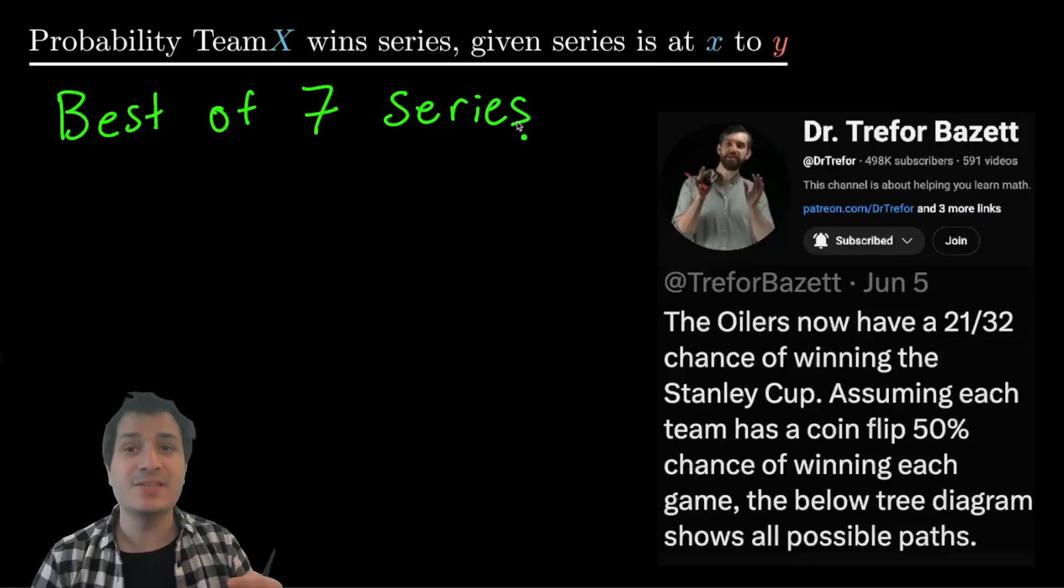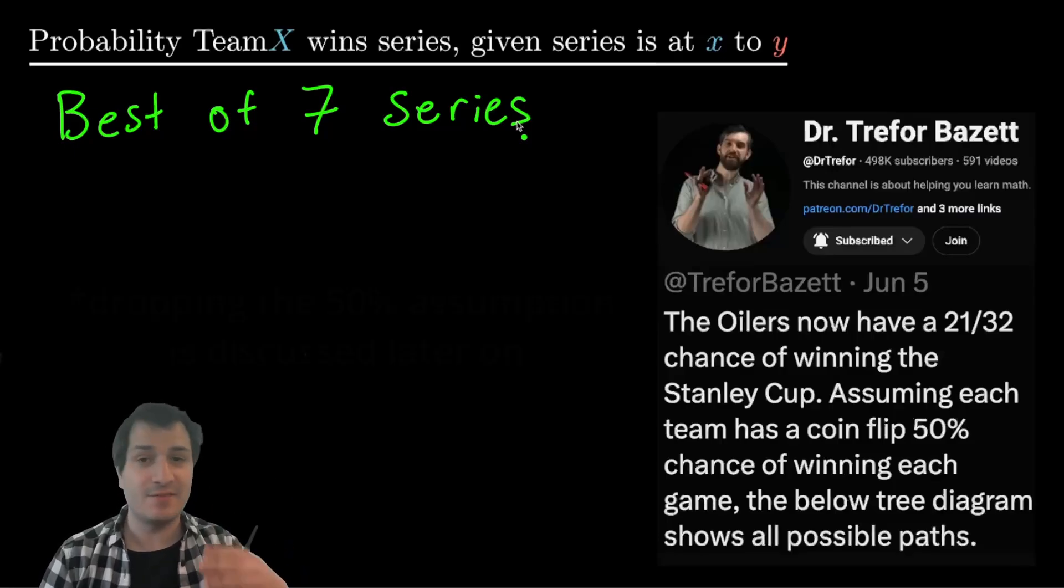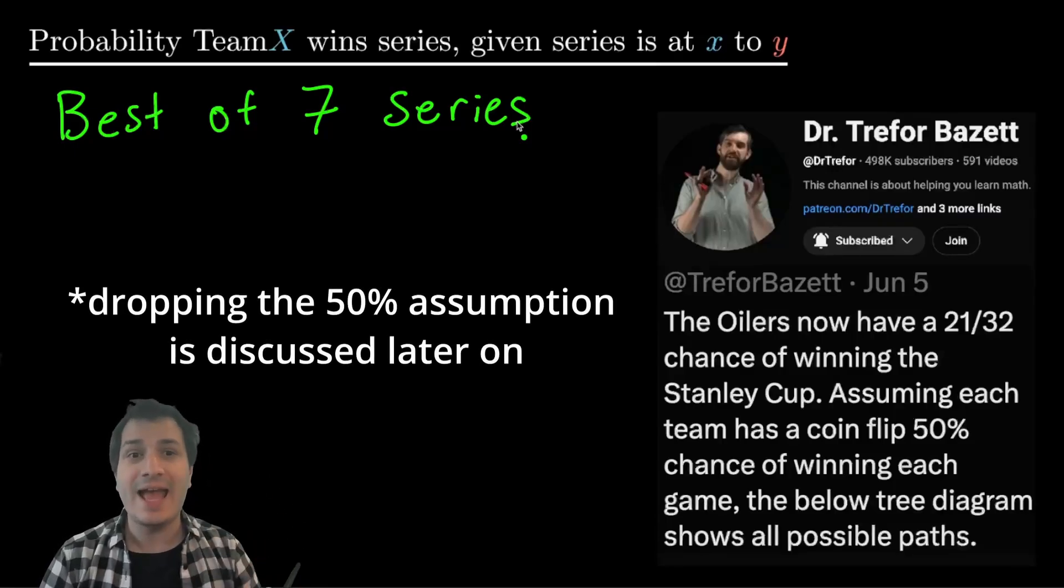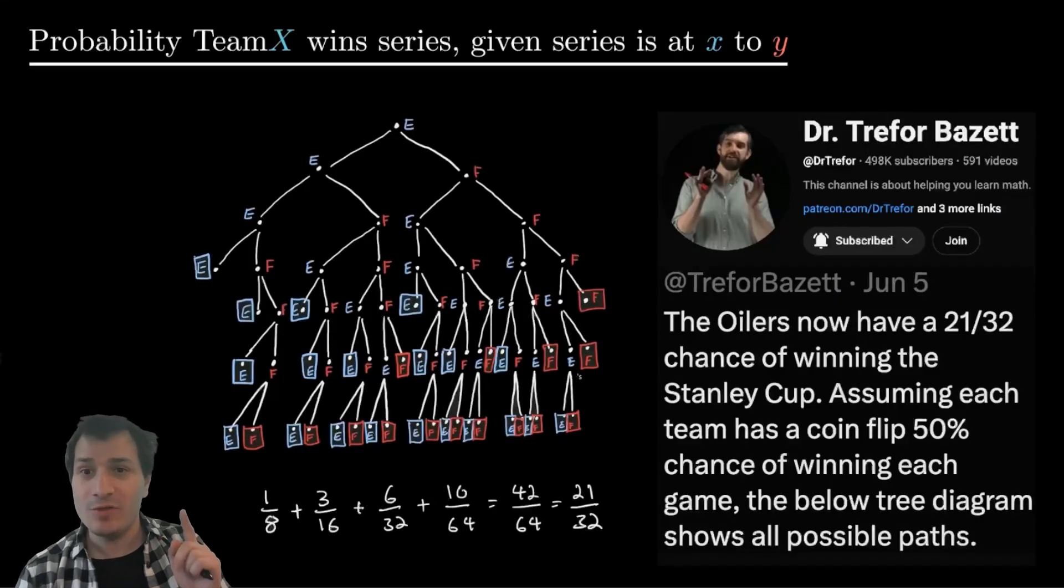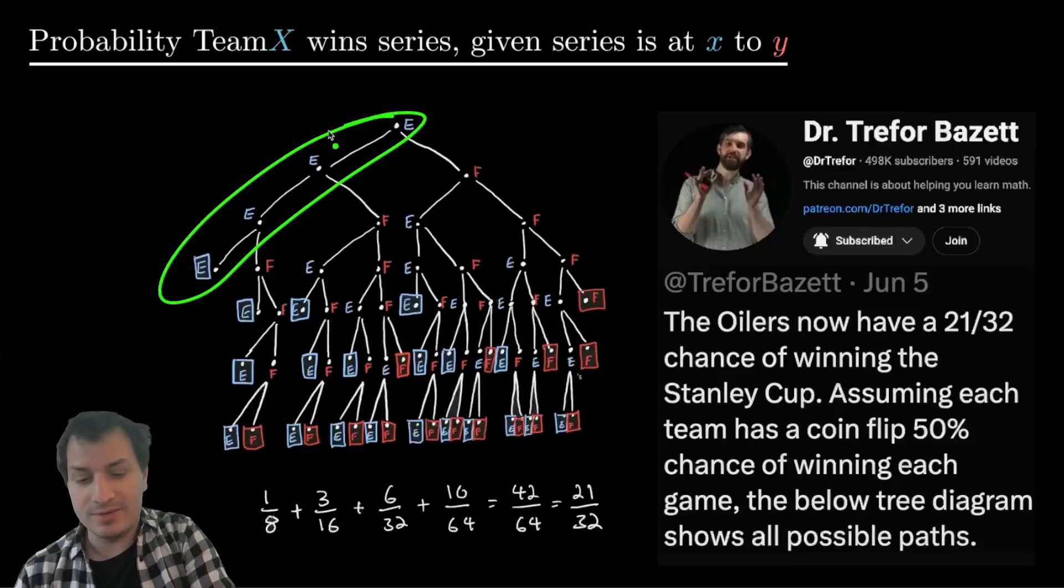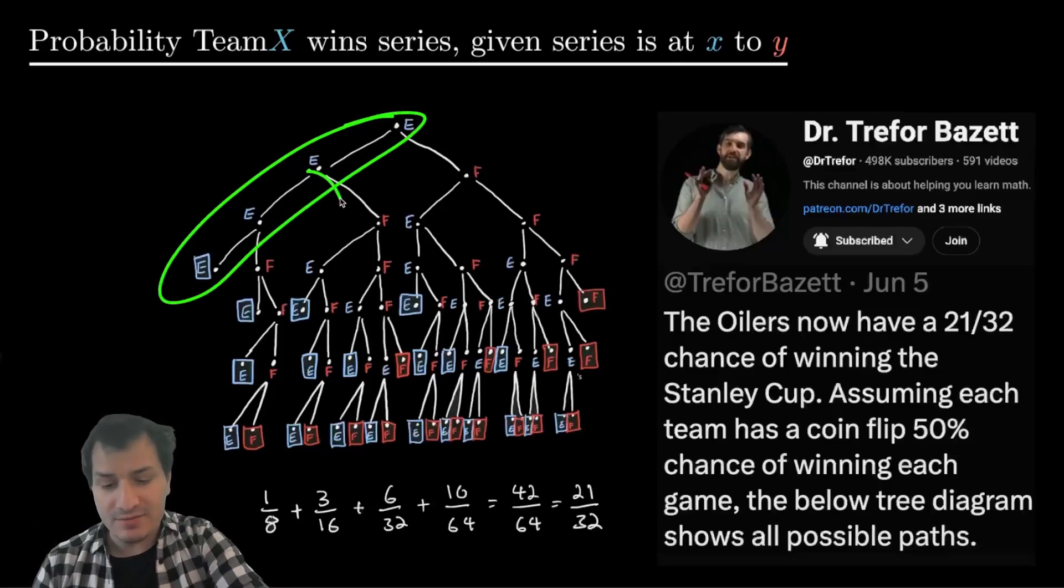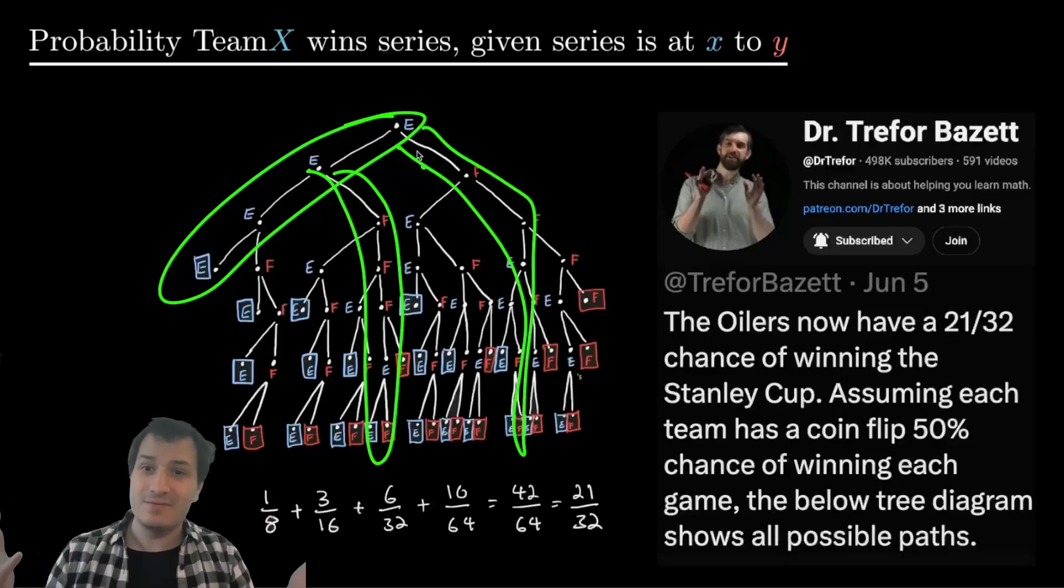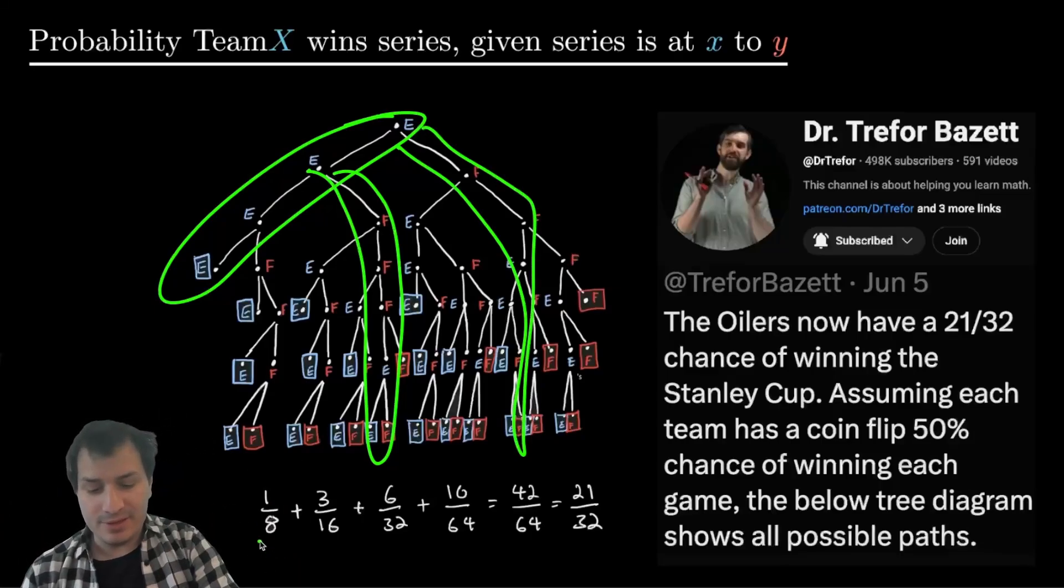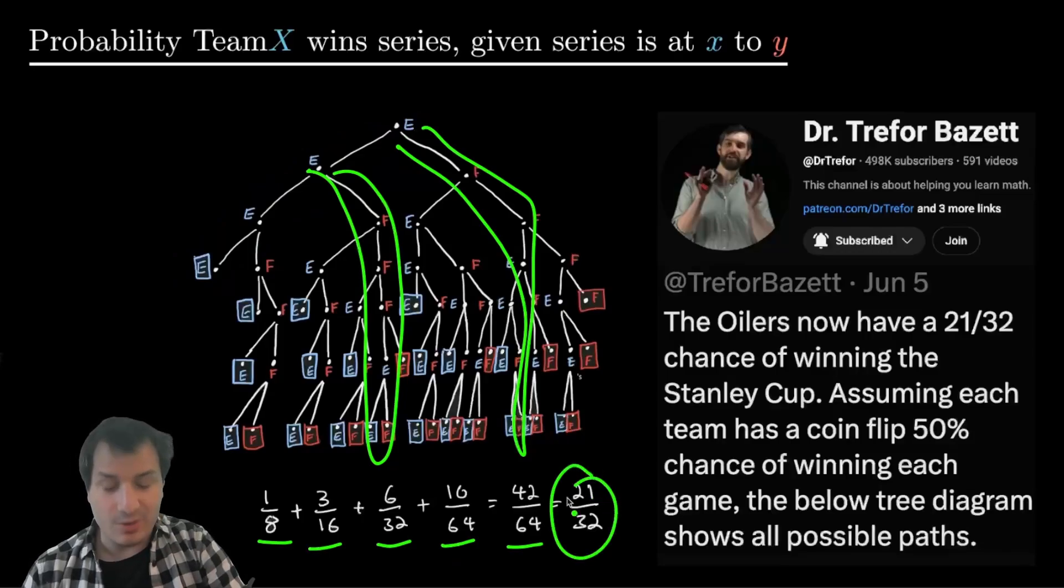This was calculated by assuming that each game after this first game has a 50% chance to go either way, and drawing out the following tree diagram that shows all the possible ways the next six games in the series can unfold. By adding up the probability of all these different outcomes, we got this final outcome of 21 out of 32.